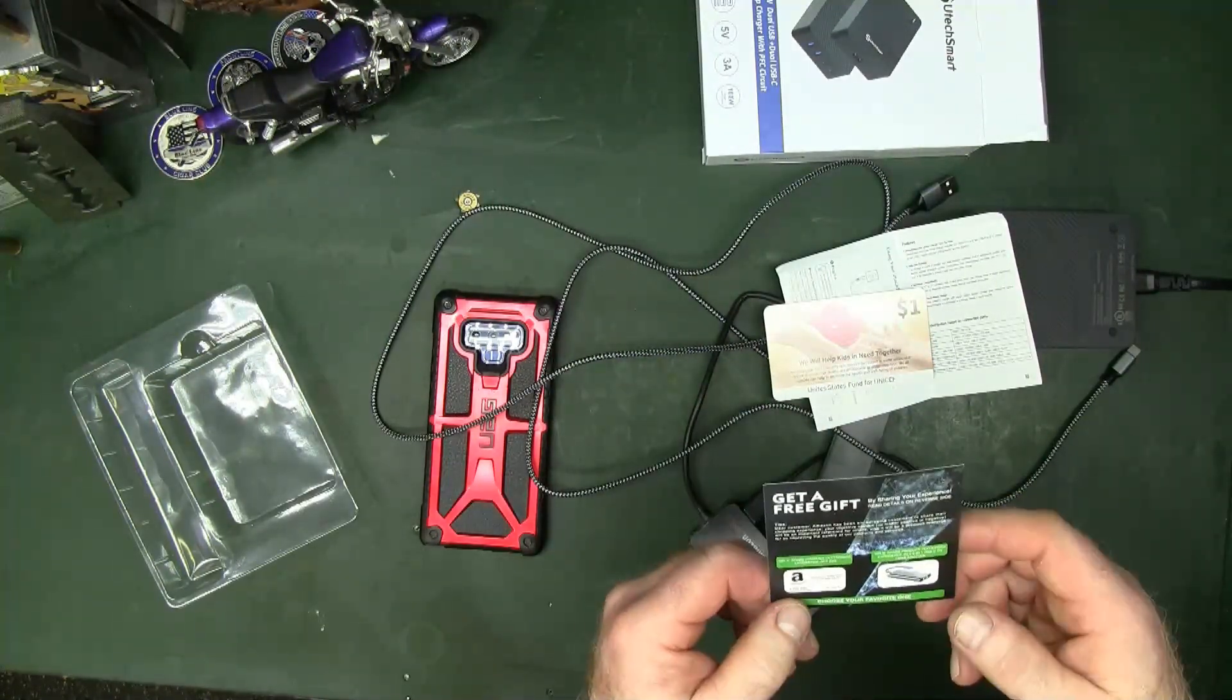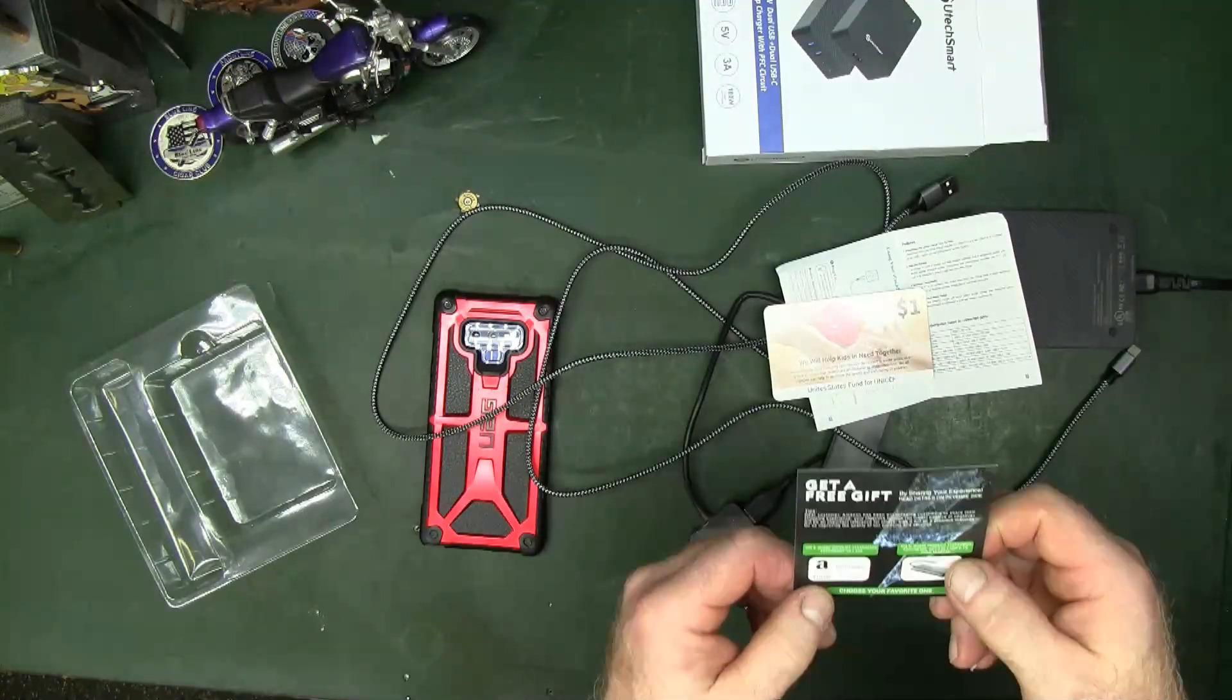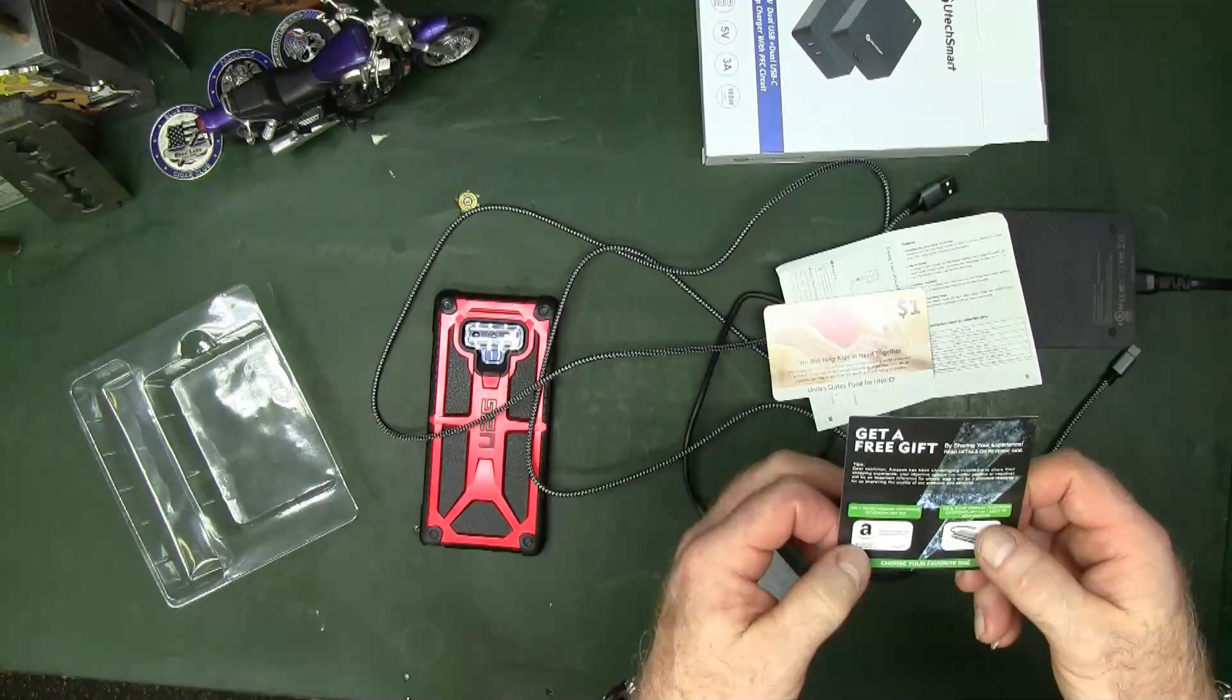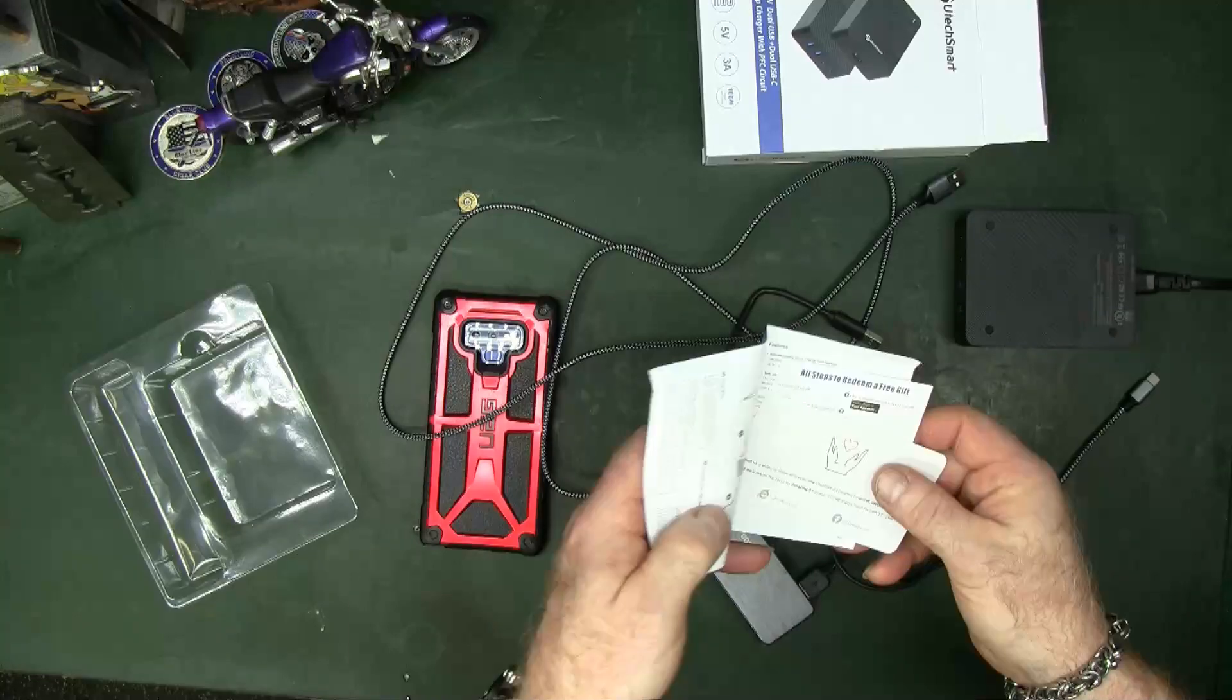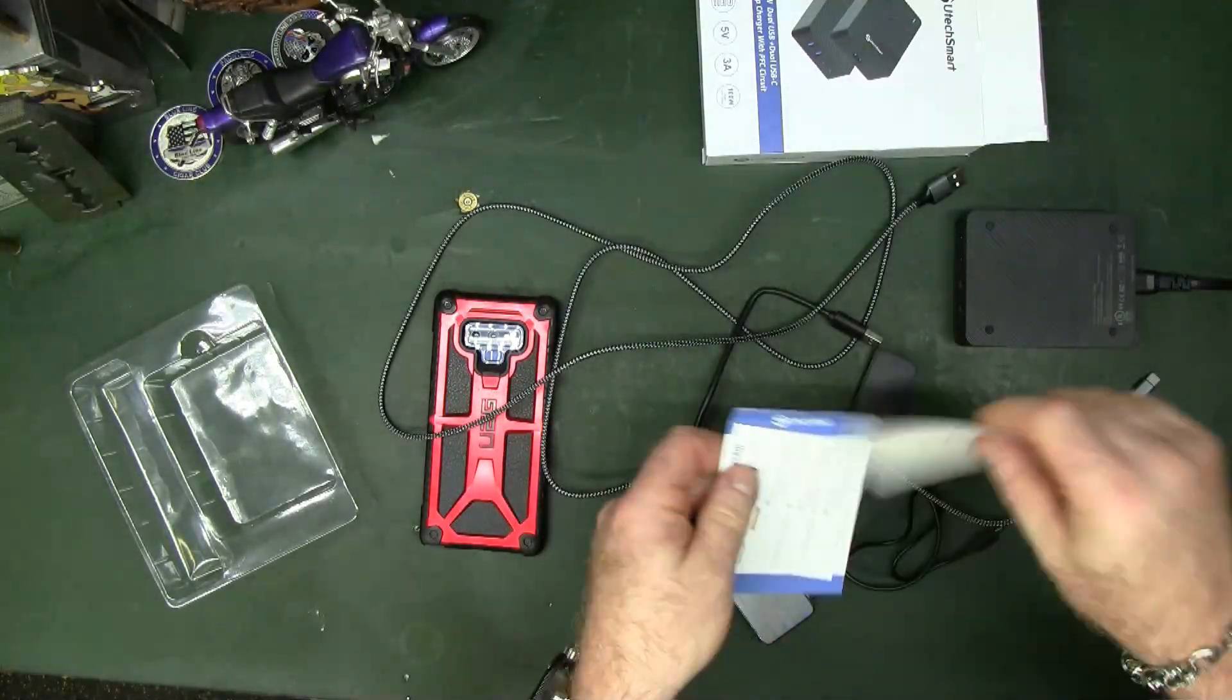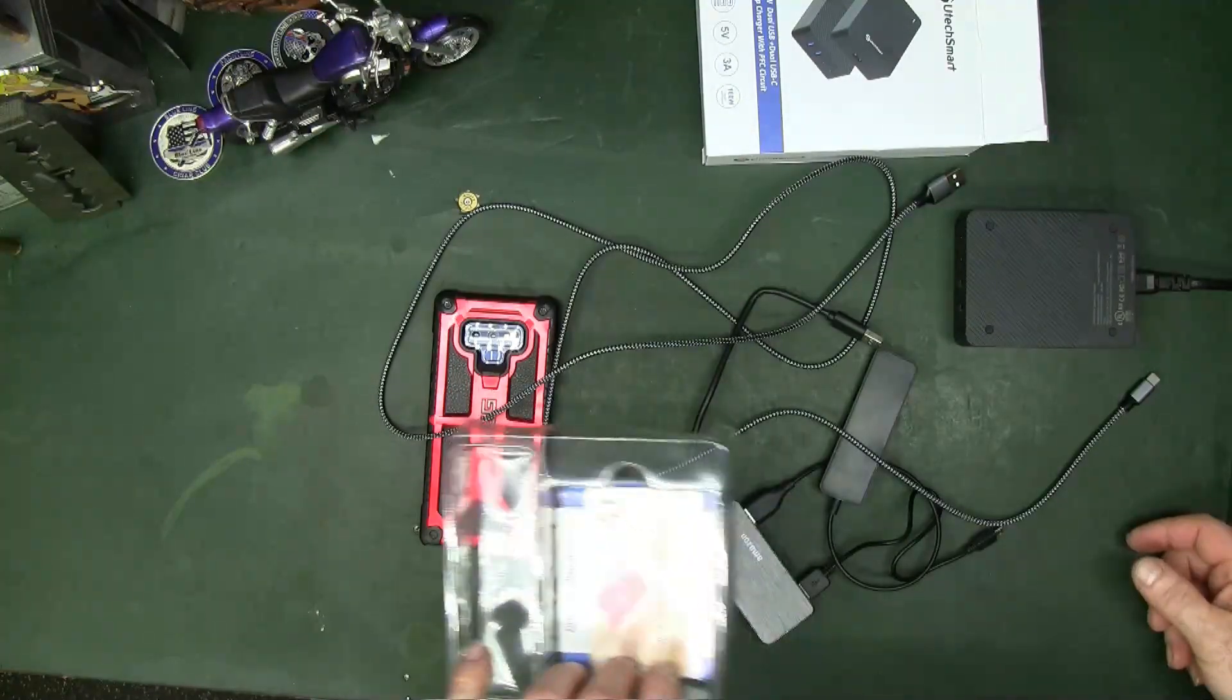One of them happened to be the USB-C to an HDMI adapter, and another one was a $20 gift card. So keep that in mind when you consider this item, that that does offset it a little bit.